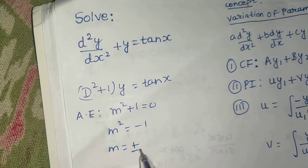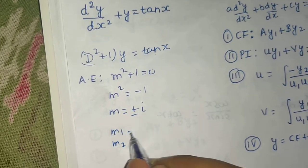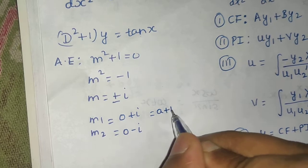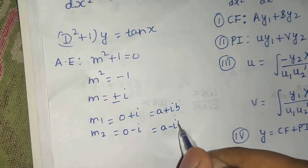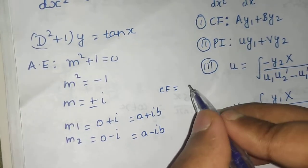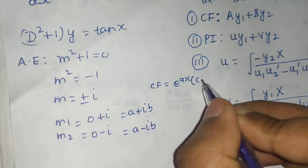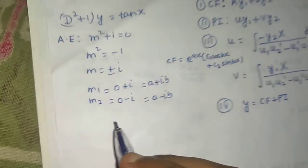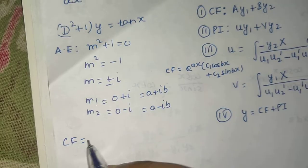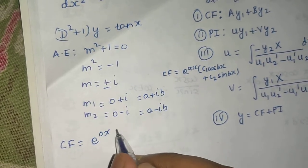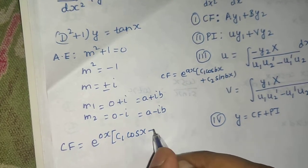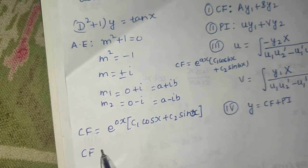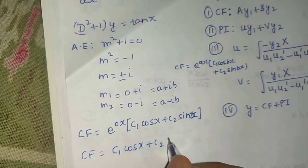So m = ±i. We can write m1 = 0 + i and m2 = 0 − i, which is of the form a ± ib. In this case, the complementary function is e^(ax)(c1·cos(bx) + c2·sin(bx)). Here a = 0 and b = 1, so e^(0·x) = 1, giving CF = c1·cos x + c2·sin x.